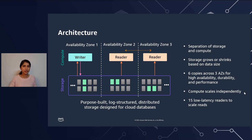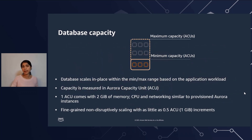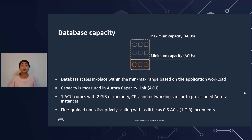If this architecture seems familiar, it is because this is Aurora's architecture that we built Aurora Serverless V2 on top of. Where does Serverless V2 come in? It gives you the capability to scale each of these reader and writer nodes up and down based on your workload. At provisioning time, what you do is specify a minimum database capacity and a maximum database capacity. What Serverless V2 does is scale in place within this capacity range that you have provided.